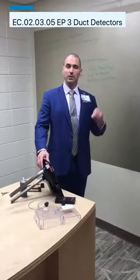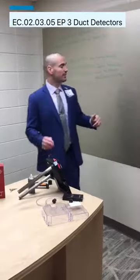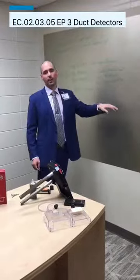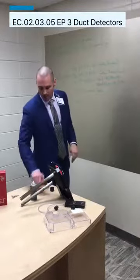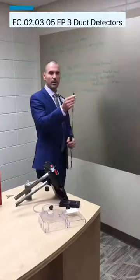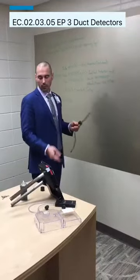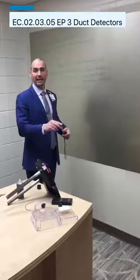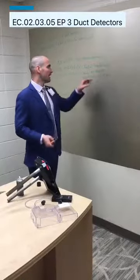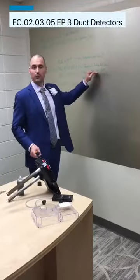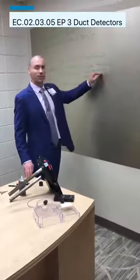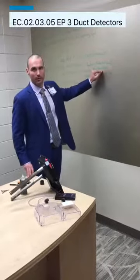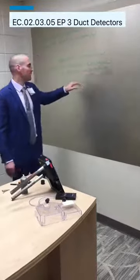Manufacturers require that the duct detector fall within a certain velocity within the ductwork. From my experience, 100 to 4,000 feet per minute is pretty common — check your manufacturer's guidelines. What we use here is a thermal anemometer with a thermal element that checks feet per minute. We put it through the exhaust tube and check it, so we don't have to open the access panels. You can also use a vane anemometer. You're trying to get a gut check that you're within this range.